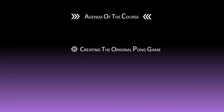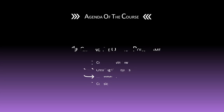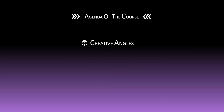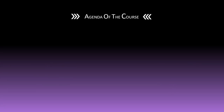Let's take a quick minute to cover what we will be building in this course. We'll start with the basics of the original Pong game: creating a window, drawing the ball and paddles, defining movements, and then collisions such as the ball hitting boundaries or paddles. After this, we'll build a new element called creative angles, then two gadget pairs. Gadget pair one includes the smash element and flash element. Gadget pair two includes ball cloning and paddle cloning. Finally, we'll add the scoreboard and end screen.